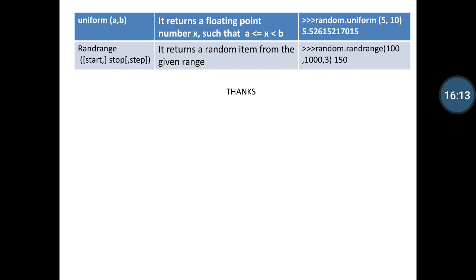Then after we discuss uniform function. It also uses two arguments a and b, or any kind of variables you want to define as arguments. It returns a floating point number x such that a less than or equal to x and x less than or equal to b. The example is shown here. At the script you can write the code: random.uniform(5, 10). And its result is shown in the slide or when you execute on the script at your Python environment.